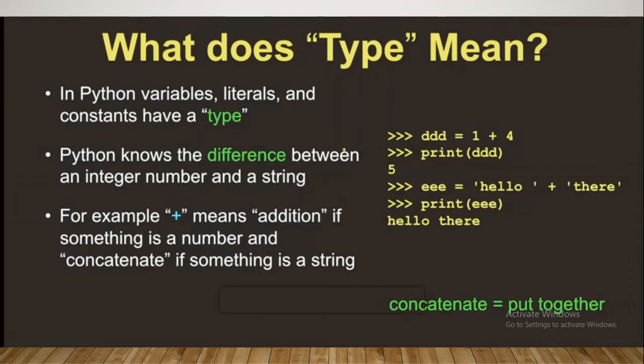If I say you have a variable called ddd - one plus four - the Python gets the knowledge that it's an integer. So adding it gives you a value: one plus four equals five. That's a mathematical calculation.